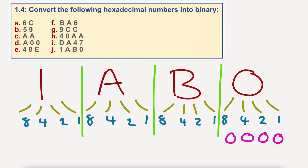B — I think we said before — was 11. So let's work out what 11 is: 8, 0, 1, 1. A is 10, so that would be 1, 0, 1, 0.